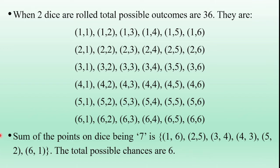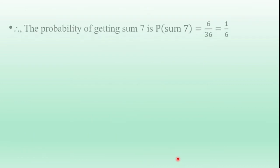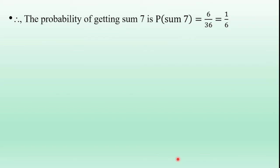For Event A — sum of the points on the dice being 7 — the possible combinations out of the sample space are: (6,1), (5,2), (4,3), (3,4), (2,5), (1,6). So the favorable outcomes are 6. Therefore, the probability of getting sum 7 equals favorable outcomes divided by total outcomes = 6/36 = 1/6.